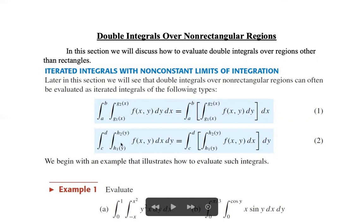Similarly, the second type is the integral from c to d of the integral from h1(y) to h2(y) of f(x,y) dx dy. We first integrate the function with respect to x treating y as a constant, which gives a function of y, and then integrate that function with respect to y from c to d.